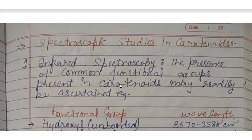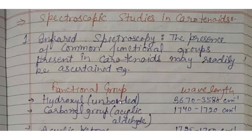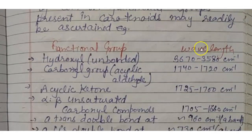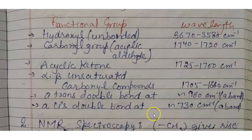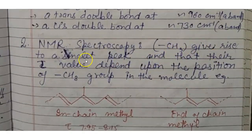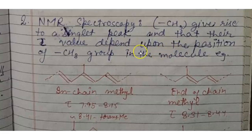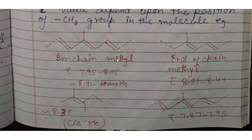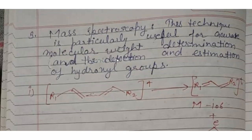In spectroscopy studies of carotenoids: infrared spectroscopy can readily identify common functional groups present, such as hydroxyl groups and their corresponding wavelengths. In NMR spectroscopy, the CH3 group gives rise to a singlet peak, and the chemical shift value depends upon the position of the CH3 group in the molecule. Mass spectroscopy is particularly useful for accurate molecular weight determination and detection and estimation of hydroxyl groups.